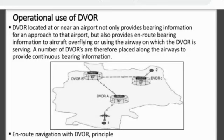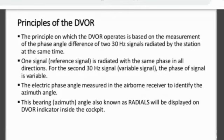It provides bearing information to an aircraft overflying this DVOR. Now, the principle of DVOR: the DVOR transmits two 30 Hz signals in the 360 degree angle, that is in all directions. The first 30 Hz signal has the same phase in all directions, but the second 30 Hz signal has variable phase in direction. The phase of the second 30 Hz signal is equal to the respective angle with respect to north.